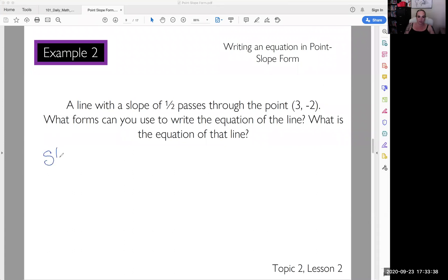So we know we can somehow get to slope-intercept form, even though we don't have the y-intercept, but we can figure that out. We also just learned how to do point-slope form. And if we look, we're given the slope and we're given a point.